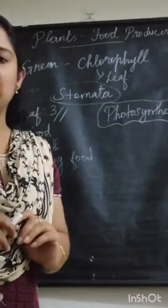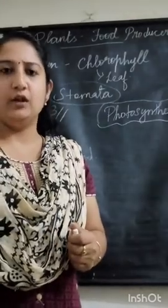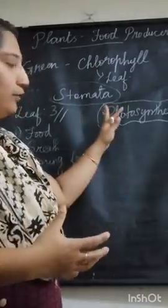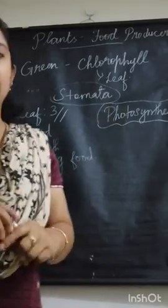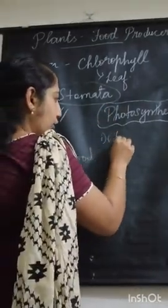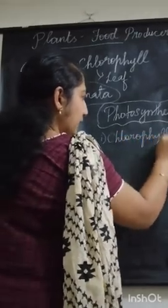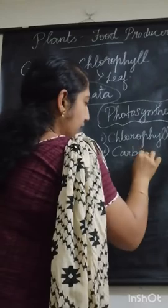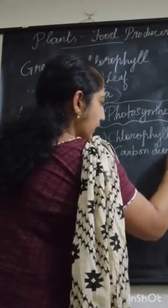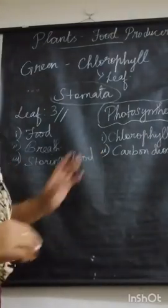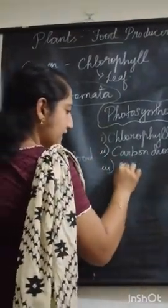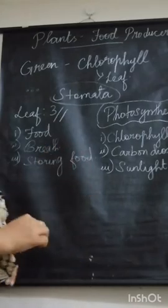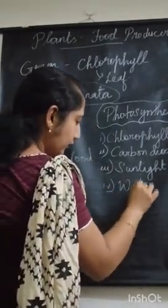For photosynthesis to occur, there are four main elements. Just like when you have a meal with idli, sambar, and chutney — you need a mix. The first element is chlorophyll. The second is carbon dioxide. The third is sunlight. And the fourth element is water.